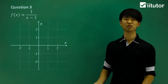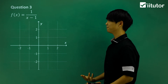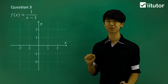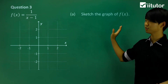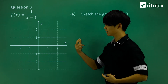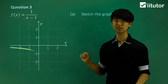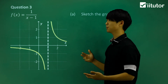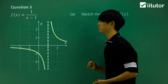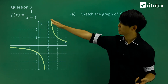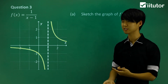In question 3, we have a hyperbola. In part A, we sketch it. It's a normal hyperbola shifted to the right by one unit, which means the new asymptote is at x = 1.